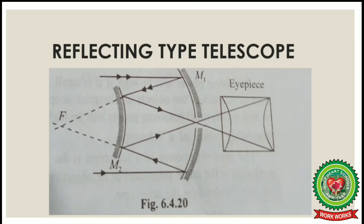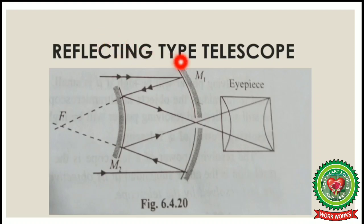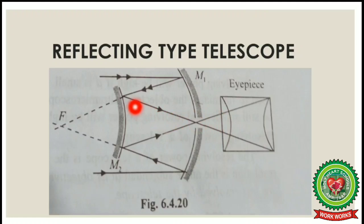Here in the figure we can see there are two mirrors — one is M1 and the other one is M2. M1 is a concave mirror whereas M2 is a convex mirror. Now the light striking on M1, when reflected back before reaching its focus, meets the convex mirror M2 and is reflected down the axis. The focal length of the convex mirror is so adjusted that a real image is formed